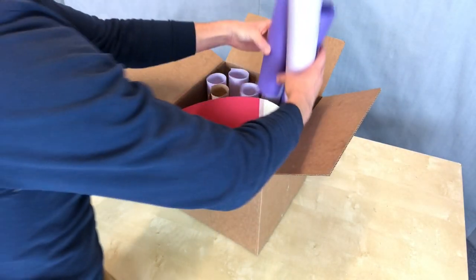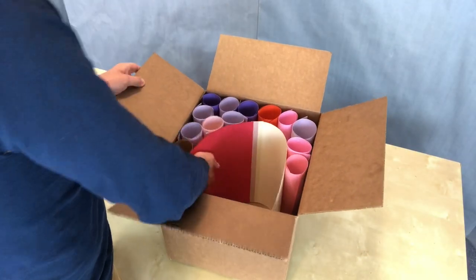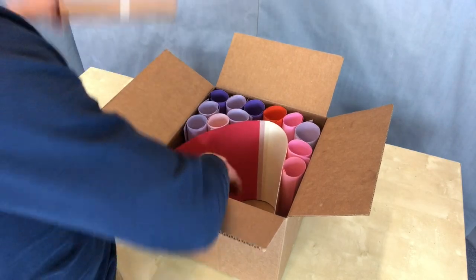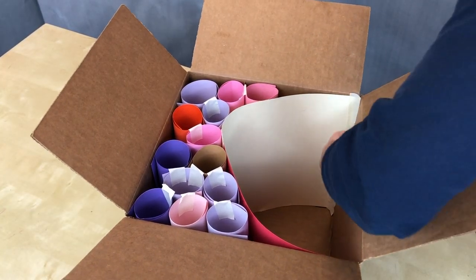Then use the same tube-making process you used with the chair and add tubes around the outside of the arch. Keep adding tubes until the outside of the arch is pretty packed with tubes.